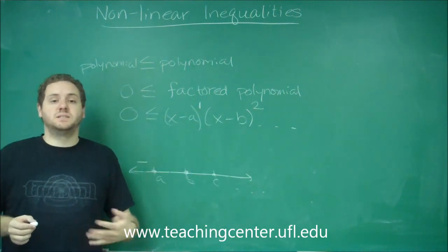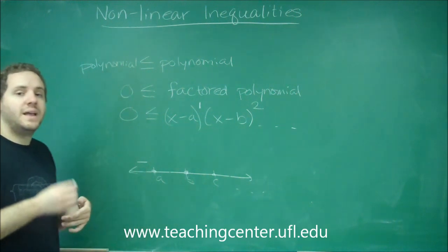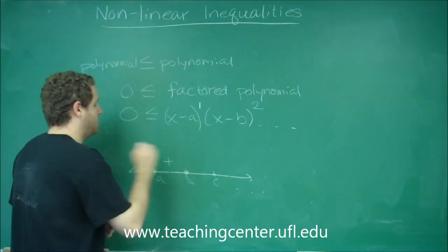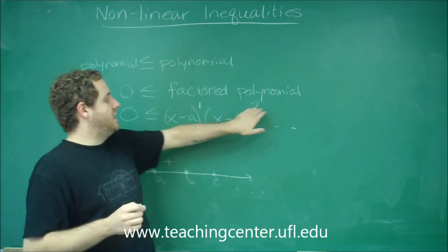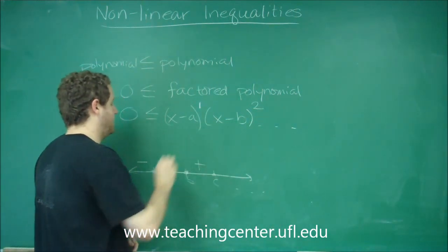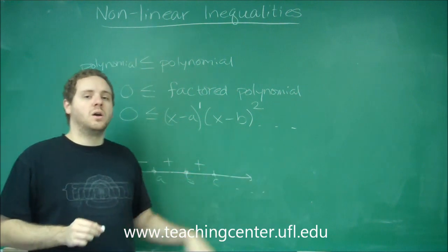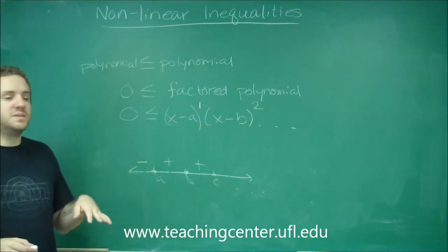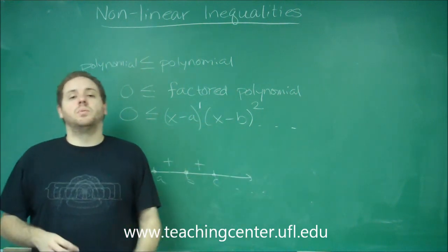You know that when you cross a, since it has an odd multiplicity, this is similar to when you're graphing the polynomials, it has to change sign, so it has to be positive. But b, which has an even multiplicity, would have to keep the same sign, so it would also stay positive. And you could go along, switching the signs or keeping them the same, depending on the multiplicity of the power.